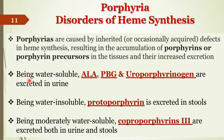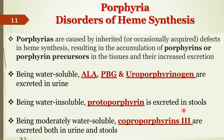ALA, porphobilinogen, and uroporphyrinogen are water-soluble — they are secreted in the urine. A doctor can ask the patient to measure quantities of ALA, PBG, or uroporphyrinogen in the urine to diagnose the type of porphyria. Protoporphyrin is water-insoluble and excreted in the stool. Coproporphyrin is secreted in both urine and stool.